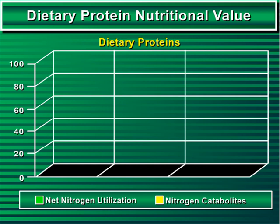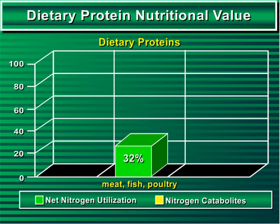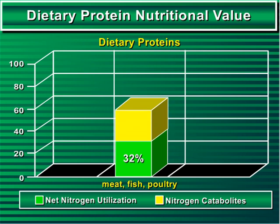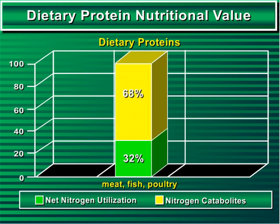To illustrate, the most nutritious dietary proteins, such as meat, fish, or poultry, provide an average of 32% NNU. This means that only 32% of their constituent amino acids act as precursors of body protein synthesis to become the body's constituent proteins. Meanwhile, the remaining 68% are catabolized, thus releasing nitrogen catabolites and energy.